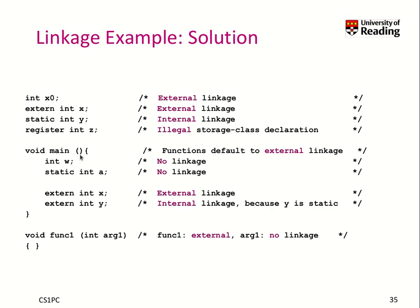Then we have main: because this function has not been declared as external, by default it is external. So it uses external linkage, meaning it's available everywhere. The main function always must be externally linked because it's used by the loader to start our program.